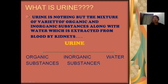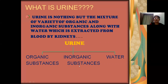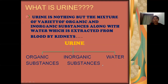Is urine useful to us? No. Daily we take food and water. When that gets processed, undigested food will be produced, excess salts will be produced, and if water is extra to our body, that is also present. Excess undigested food is eliminated through the digestive system. But excess salts and excess water present in our body are taken by the blood. When blood comes to the kidneys, the kidneys filter the blood, and that filtered product is how urine is formed. So urine is nothing but a composition of excess organic substances, excess inorganic substances, and excess water extracted from the blood by the kidneys.